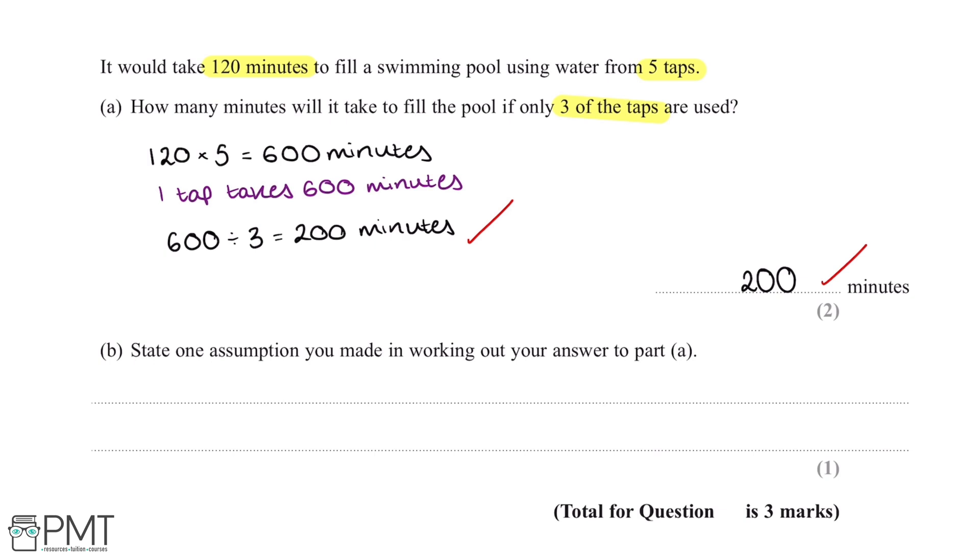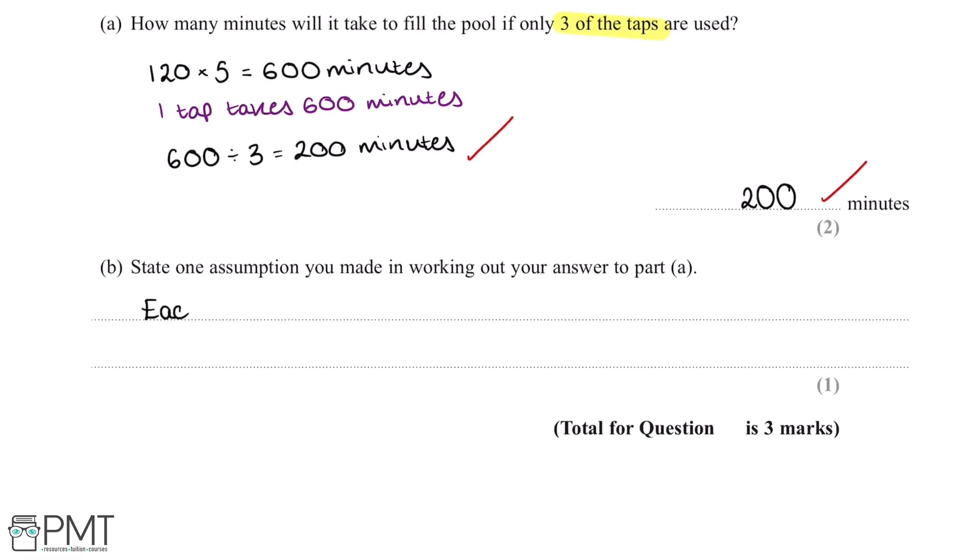However, some taps may have a higher water flow than other taps. So therefore, the assumption we made was that each tap filled up the swimming pool at the same rate. We can write something along the lines of 'each tap will fill up the pool at the same rate.'